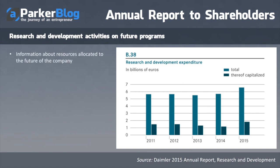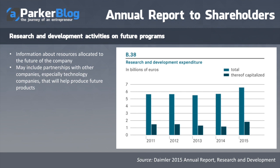Finally, research and development activities on future programs. You can see how much is being spent on those programs, along with information about the resources allocated. It may include partnerships with other companies — for example, a tech company sourcing chips from another firm. It's often used to reassure investors of a brighter future through prototypes and concepts — though, as we've all seen with wild car prototypes, they don't always come to fruition.